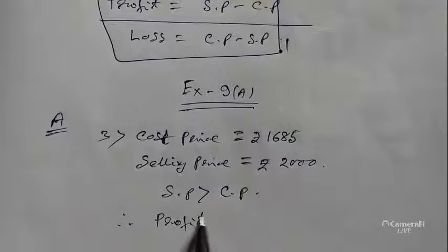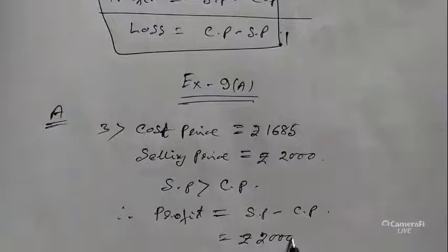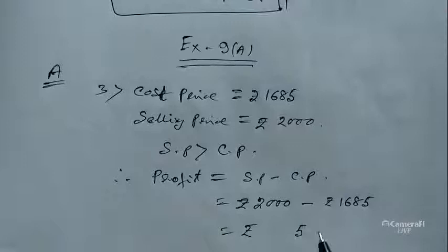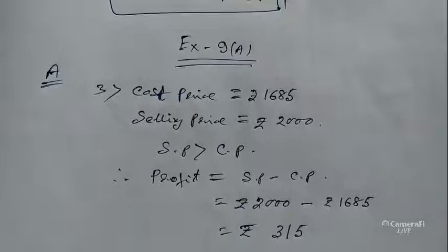What will be the profit? The larger value SP minus the smaller value CP: SP is rupees 2000 and CP is rupees 1685. Subtracting, we get rupees 315. This is the profit value.